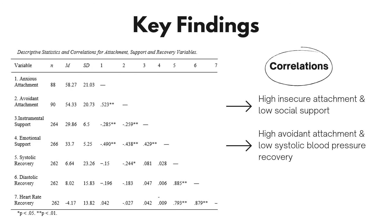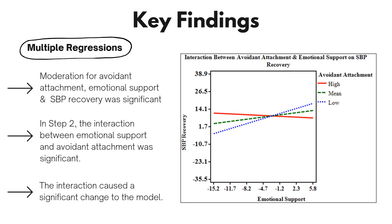Correlation analyses were also conducted and the results are shown in the graph. There was a correlation between high insecure attachment and low social support, and also a correlation between high avoidant attachment and low systolic blood pressure recovery. The main moderation analyses were conducted using multiple regressions.